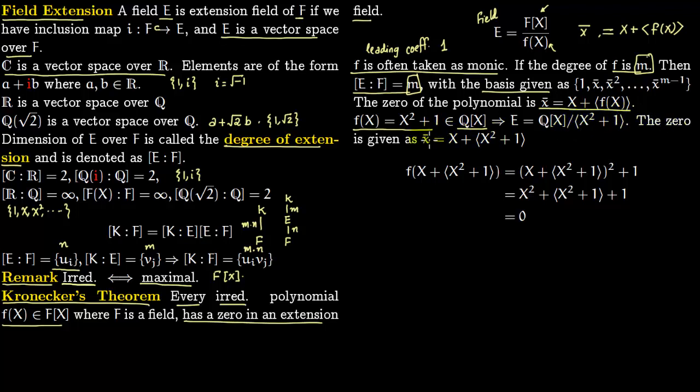The zero is given as X̄ = X + (X² + 1). Check it: you plug this in. Instead of X you are plugging this in. Whatever terms will have X² + 1 will get absorbed in the ideal. The only thing you are left with is X² and then you get +1. So X² + 1 will get absorbed into this which is equivalent to 0.